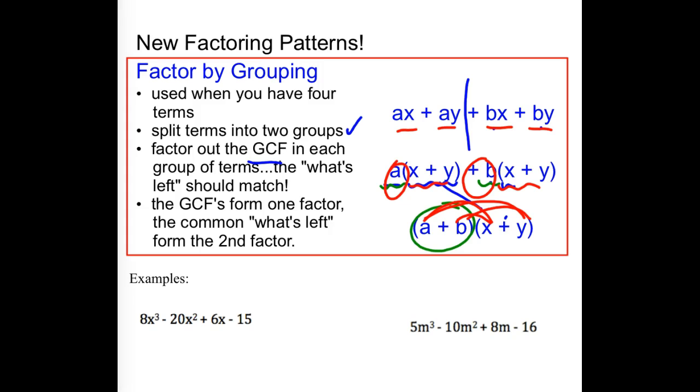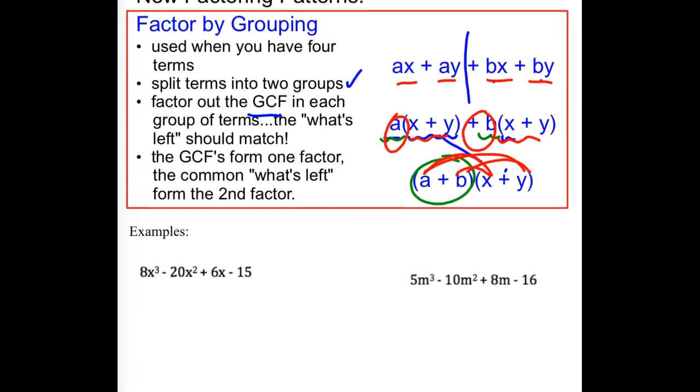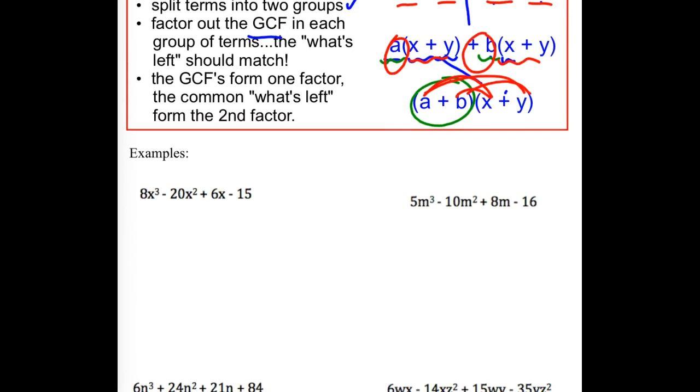So, that's factor by grouping. Once in a while, you might have four terms that you maybe have to rearrange a little bit to find something that's common that can be pulled out. But at this level of math, most of the time, you're giving them in an okay order. But if you look at the first two terms and say, well, there's nothing common, see if you can rearrange them.